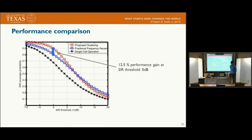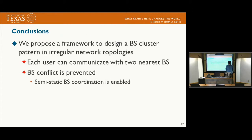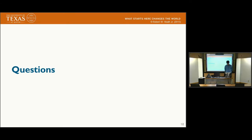Now we show the performance. Using the proposed clustering, we observed a 12.5% performance gain at the low SIR threshold of 0 dB, compared to the fractional frequency reuse method. In conclusion, we proposed a framework to design base station cluster patterns in irregular networks. Using the proposed method, each user can communicate with the two nearest base stations, while the base station conflict problem is prevented using edge coloring. Thank you for your attention.